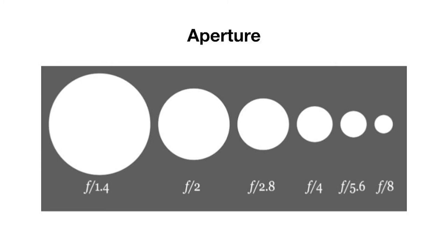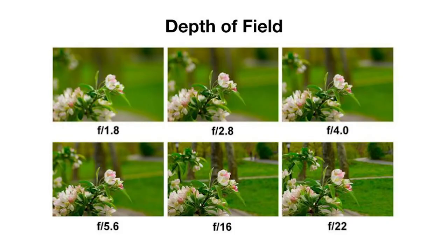As we can see here, f1.4 is a very large opening, which means lots of light will be able to enter, but this will also impact the depth of field. At f1.8, which is just a slightly smaller opening than 1.4, the background and foreground of the image are quite blurry. We refer to this as a shallow depth of field, meaning the field of focus is quite small and falls on just a specific part of the flower. As the number increases, more of the background and foreground fall into focus, and by f22, we can really make out what's happening in the background. So smaller numbers mean larger openings and more light, but also more limited depth of field.